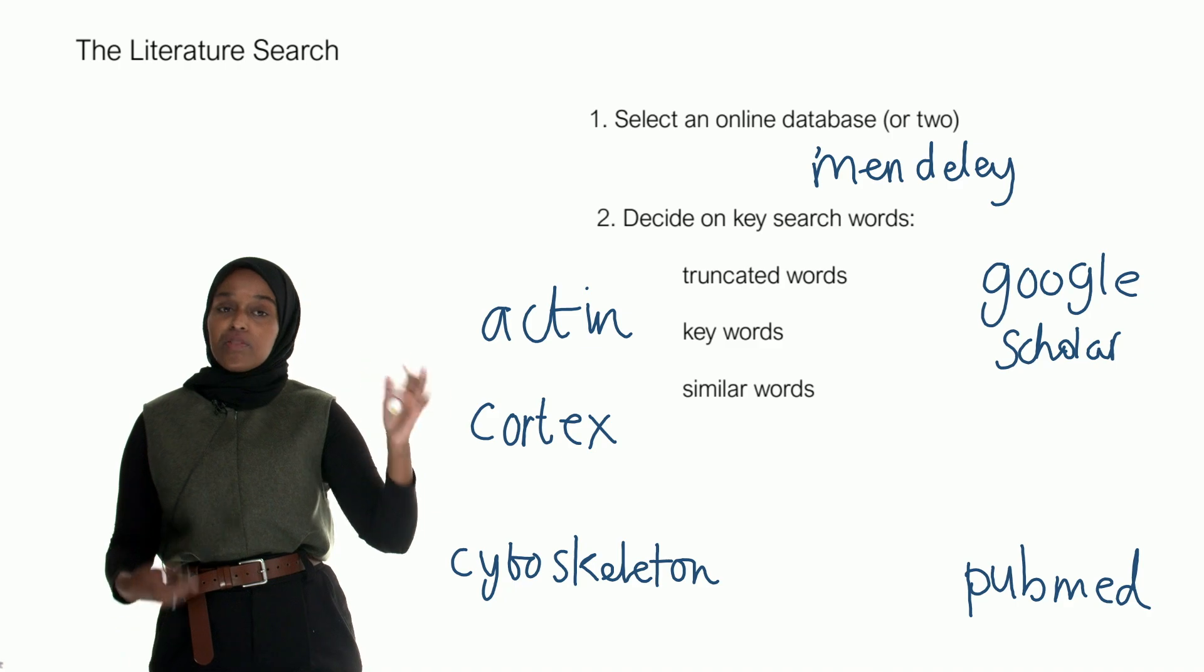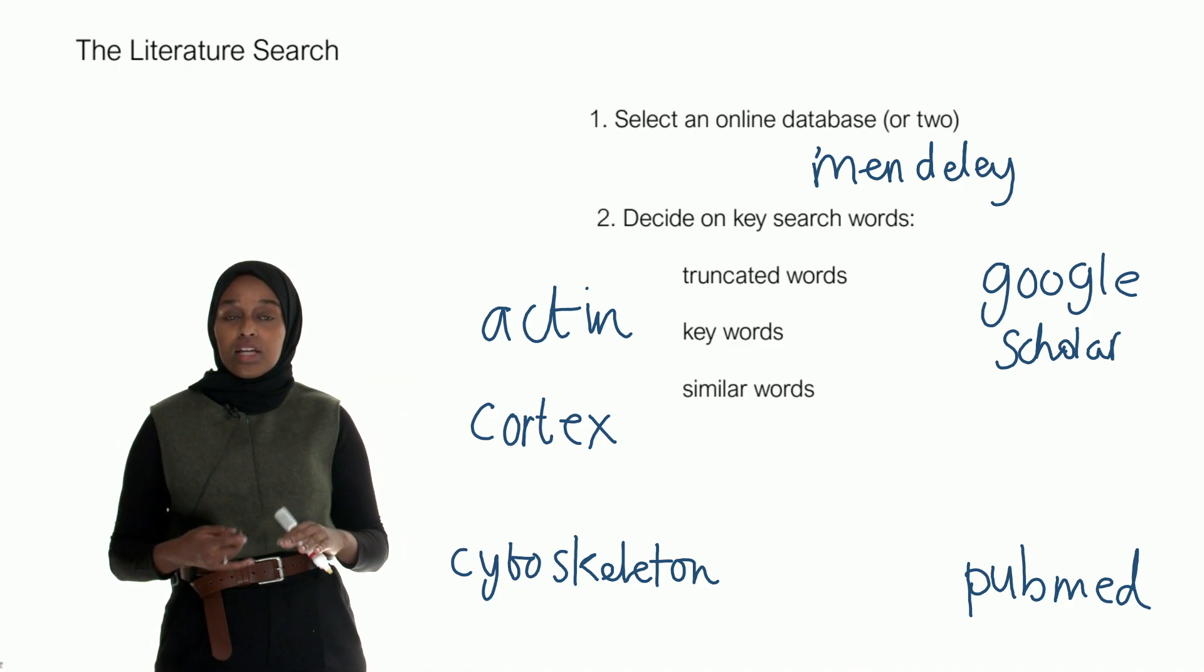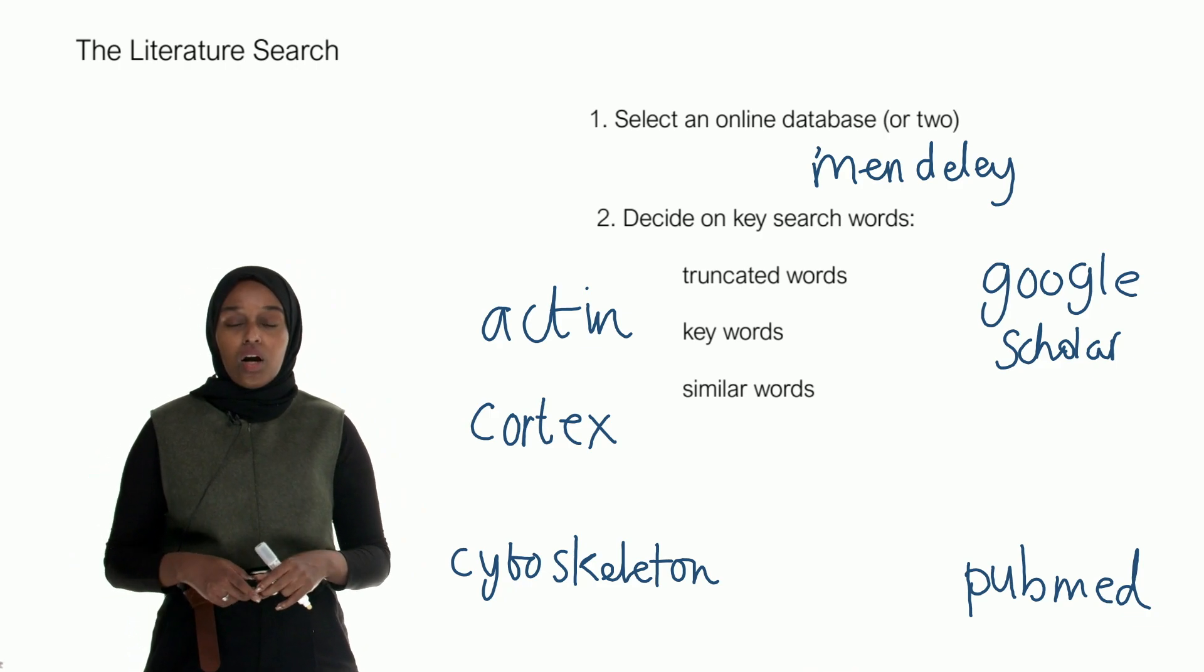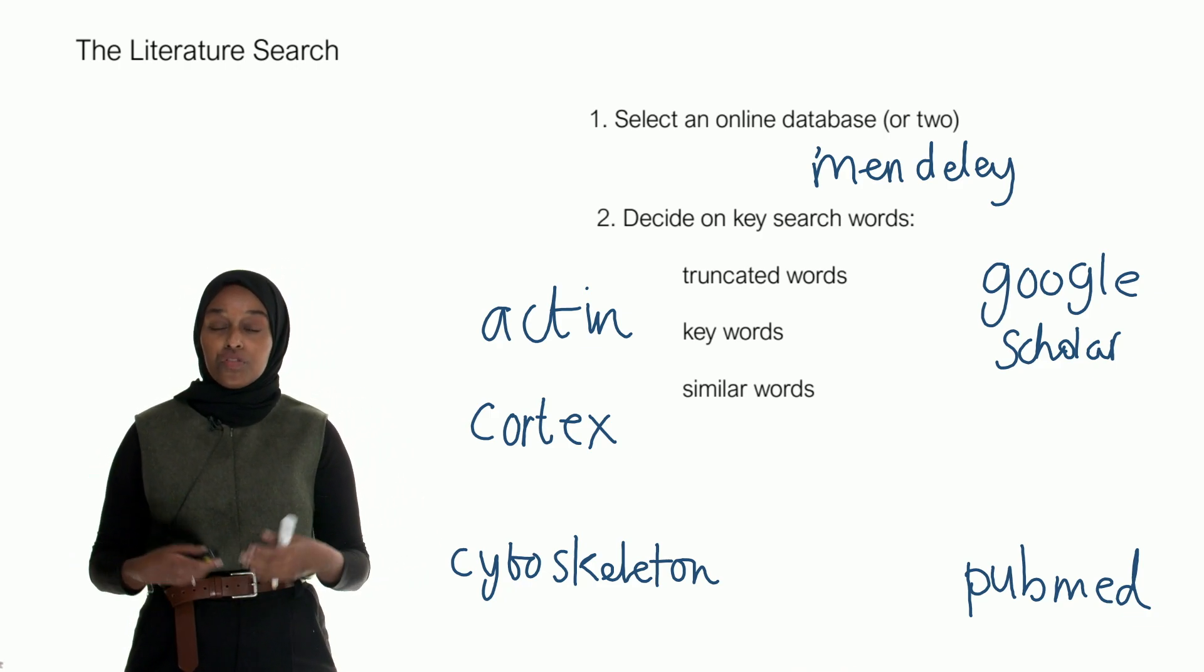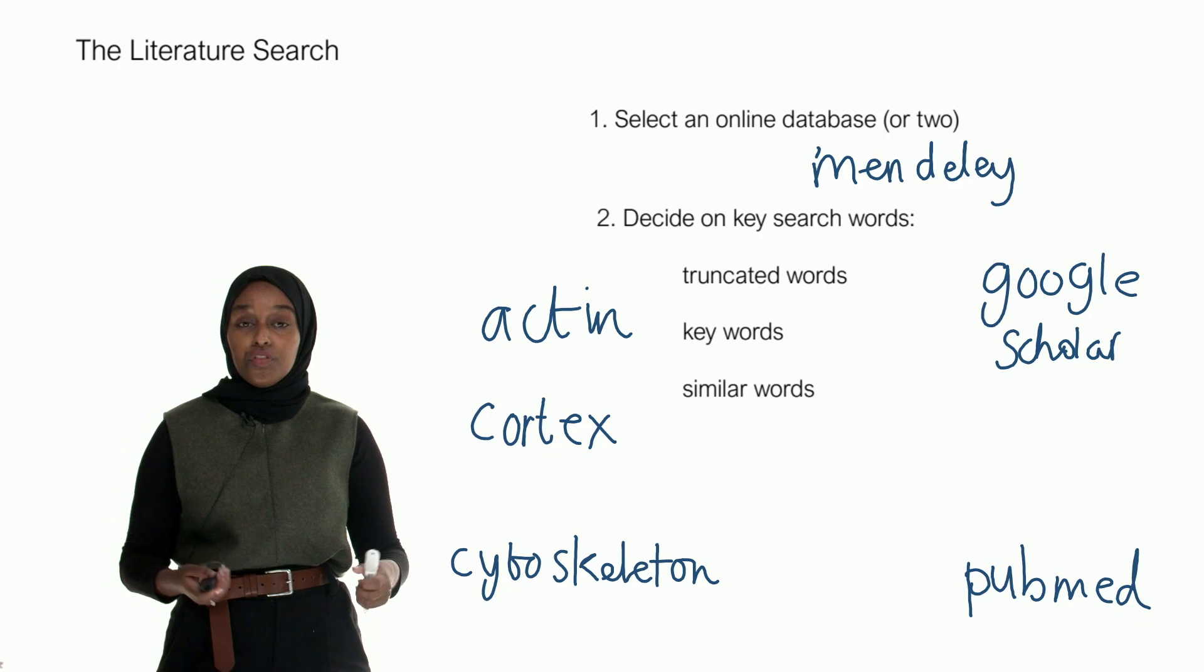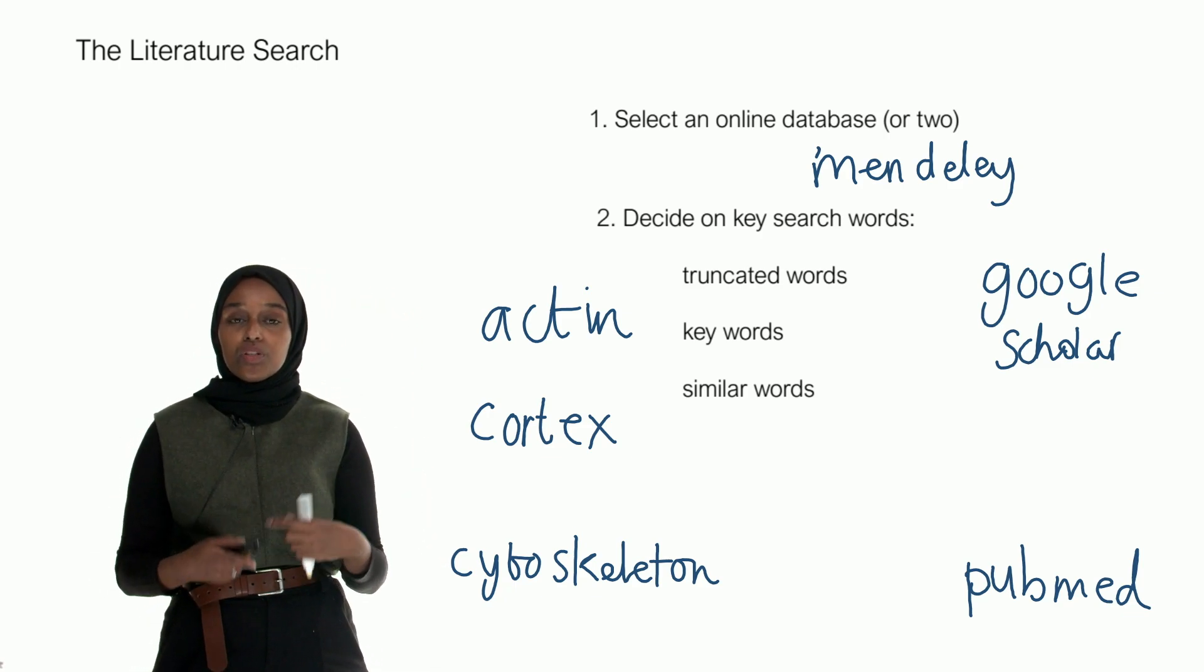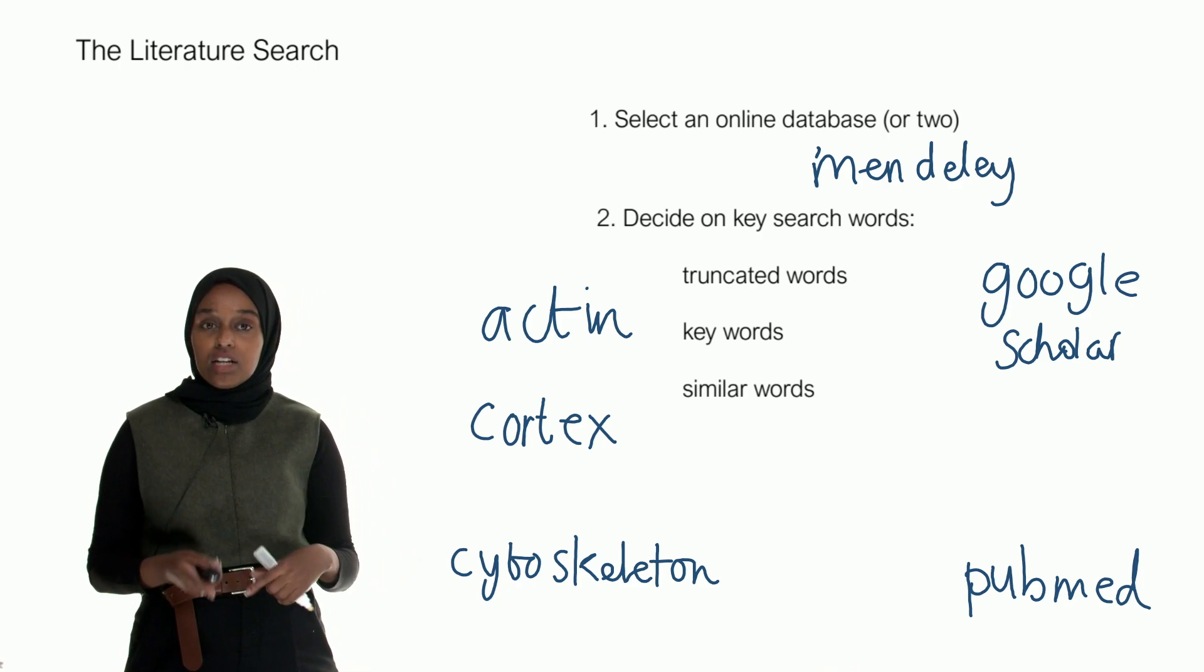So what I'd recommend you to do is maybe write down 10 keywords that you think people would look for, that would give you the right information for your specific review. Write them down, have them at hand, and keep on using those same words to search for your literature.